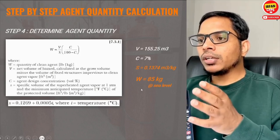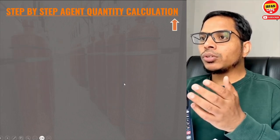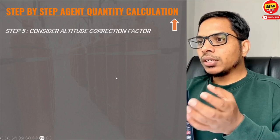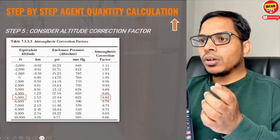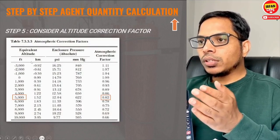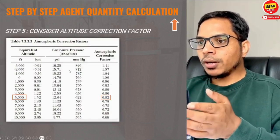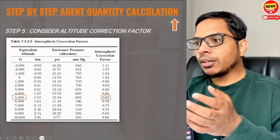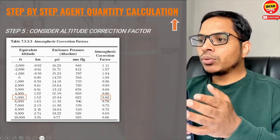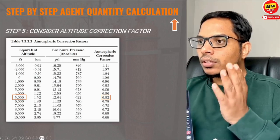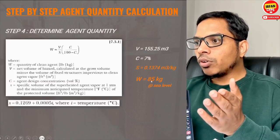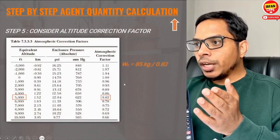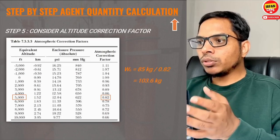At sea level, the agent quantity comes out to 85 kilograms. Now we need to apply the altitude correction factor. Since our altitude is 5000 feet, the correction factor from NFPA 2001 is 0.82. We simply divide: 85 ÷ 0.82 = approximately 103.6 kg. This is the actual agent required for our server room.